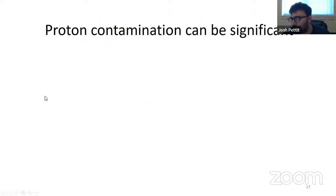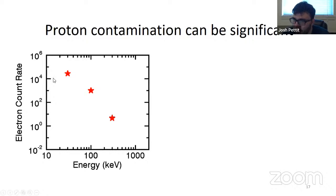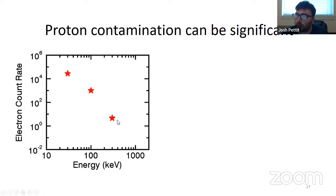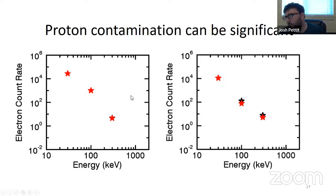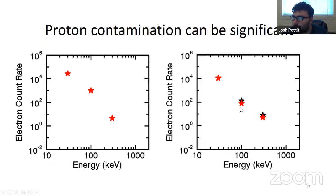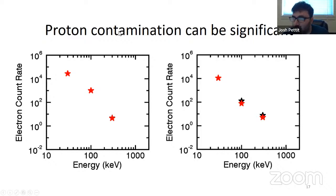Whether it's the best method is unknown because nobody's ever compared the different methods to truth, but at least we are accounting for it in some regard. It can be significant. What's shown here are the E1, E2, and E3 channels. In red is the corrected counts and in black is the uncorrected counts. This is a log scale of electron count rate. For example, in the E2 channel measuring greater than 100 keV electrons, it can be as much as a factor of two or three in count rates between the corrected and the contaminated. So it's very important to correct for this.